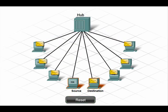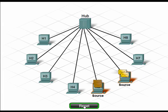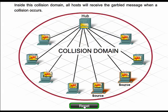Moreover, while frames are on the network, the network is in use and cannot be used by any other devices. This functionality is inefficient because it wastes bandwidth. It also poses a security problem because all devices can read any frame sent to any computer on the hub, even if the frames aren't addressed to them.